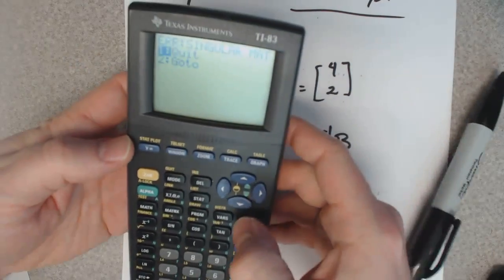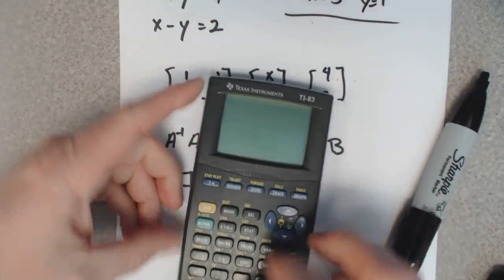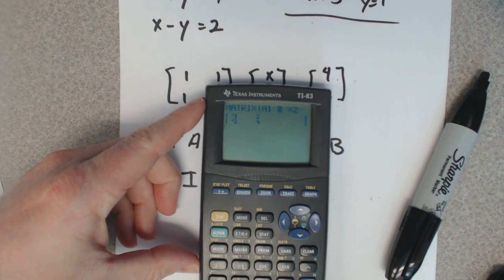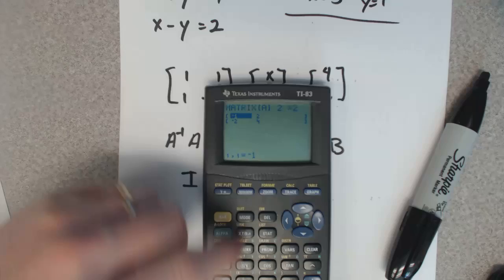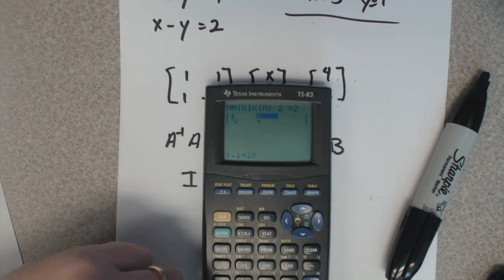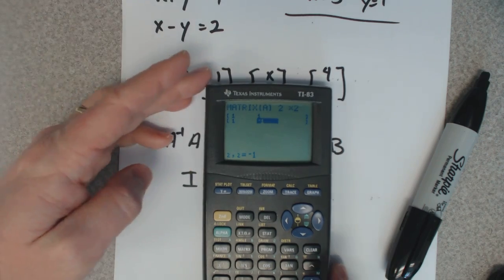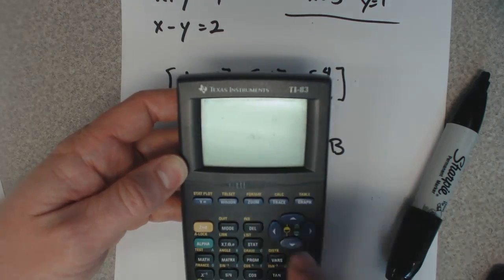You put that in for inverse A. So let's see, I got an old calculator, so I actually have a matrix button. Go over to edit. It's a two by two, so one, one, one, negative one. So I got that matrix in there.